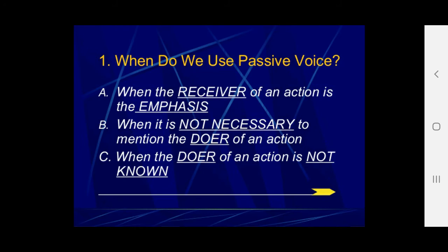Now let us wrap up with the question: when do we use passive voice? I would suggest three occasions. First, when the receiver of an action is to be emphasized. Second, when it is not necessary to mention the doer of an action. And finally, when the doer of an action is not known or unknown. Thank you for watching Force Learning Hub.